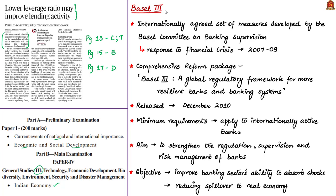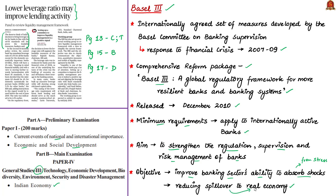Basel 3 is an internationally agreed set of measures developed by the Basel Committee on Banking Supervision, created in response to the financial crisis of 2007–2009. It is a comprehensive reform package — a global regulatory framework for more resilient banks and banking systems — released in December 2010. Basel 3 standards are the minimum requirements applying to internationally active banks, aimed at strengthening the regulation, supervision, and risk management of banks.